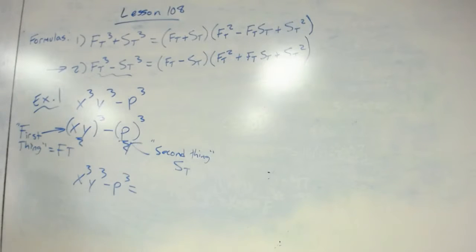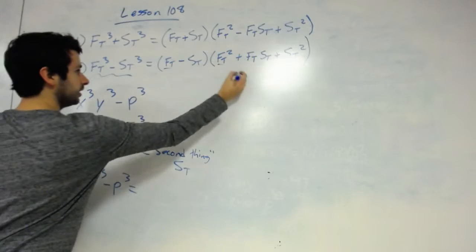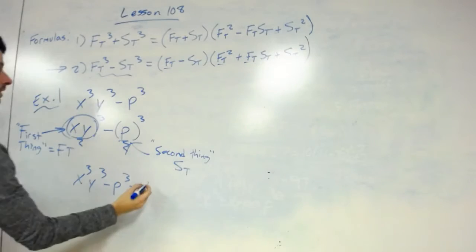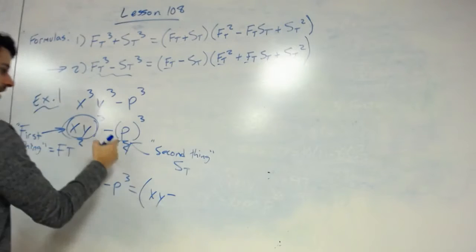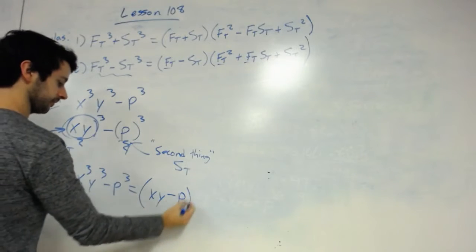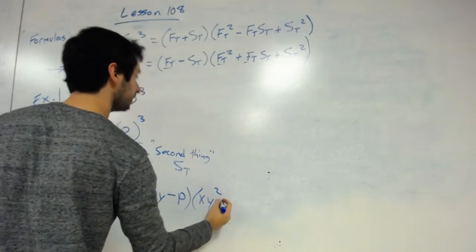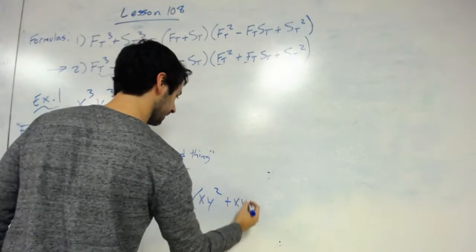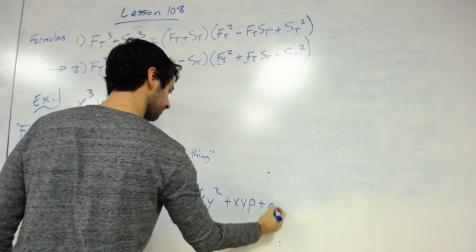So then when I start to plug everything in, I'm literally just going to plug everything in. So right here, the xy is going to plug into all the Fts. So xy minus St is just p, xy squared plus xy times p, and they're being multiplied, plus p squared.